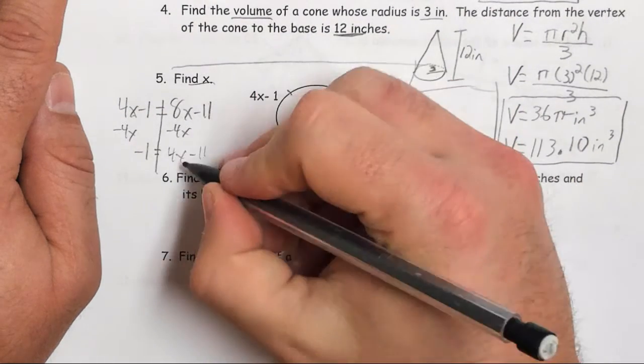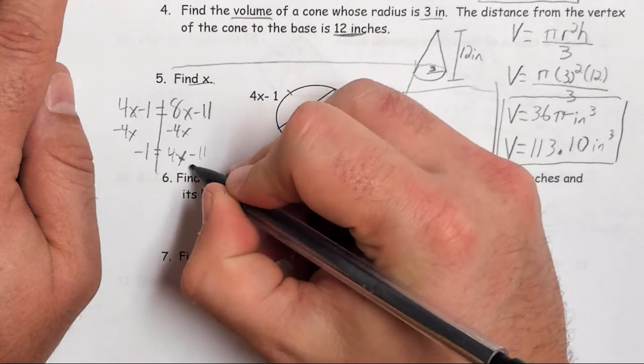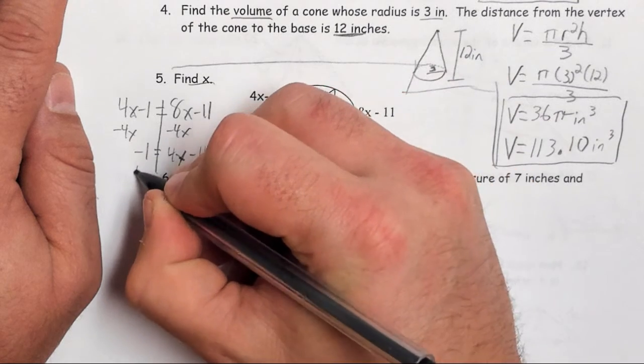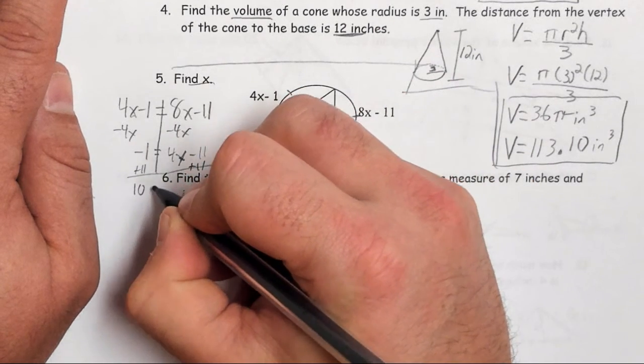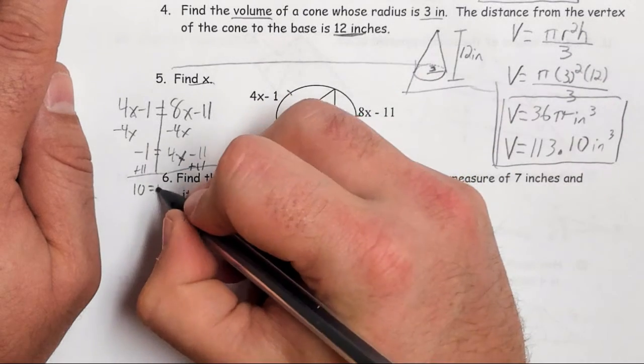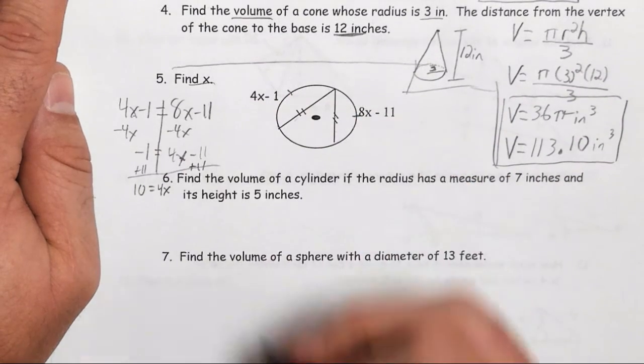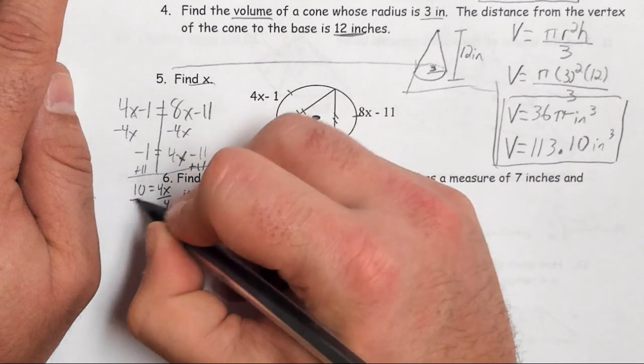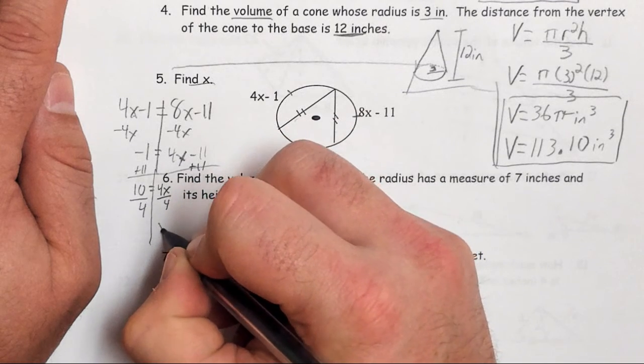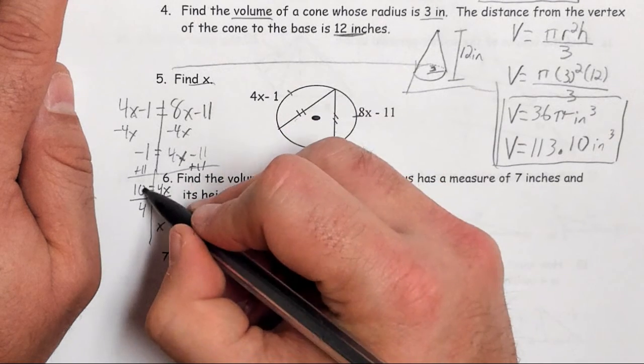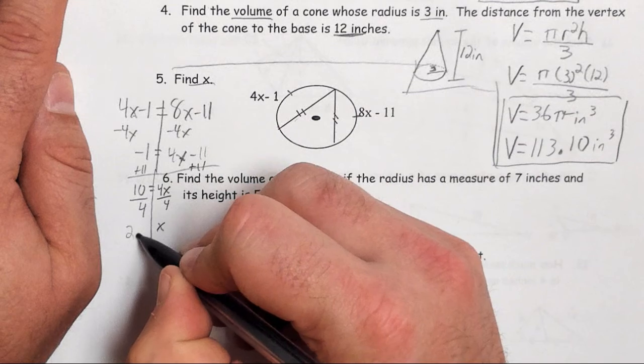And I'm running out of room here, so I'll try and hurry it up. Add 11 to both sides. Gives me 10 is equal to 4x. Going to divide both sides by 4. It gives me x equals 10 divided by 4, which is 2.5.